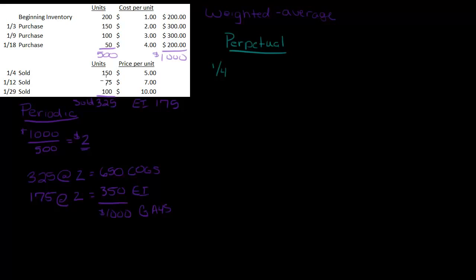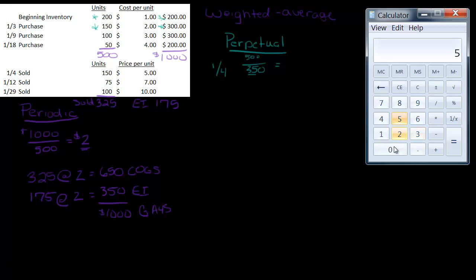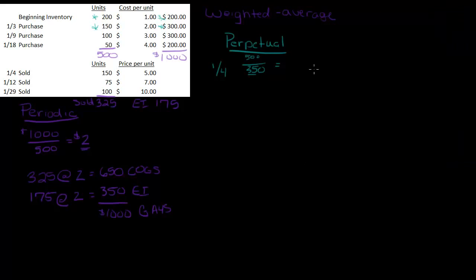So on 1/4 I sold 150 units. What do I have on 1/4? Well I've got the units from the beginning inventory and I've got the units from 1/3. So I've got 350 units. And how much did I pay for those? I paid $200 and I paid another $300 so that's $500. So I've got $500 that I spent and I have 350 units. So if I do the math, $500 divided by 350, that equals, let's see, we'll say $1.42, so we'll round that up. So $1.43 per unit.